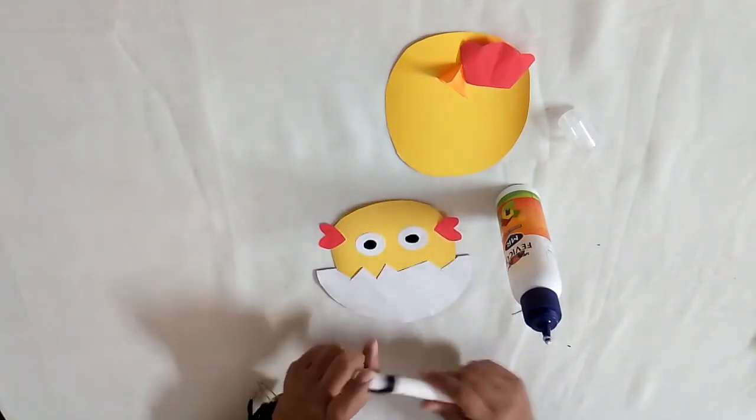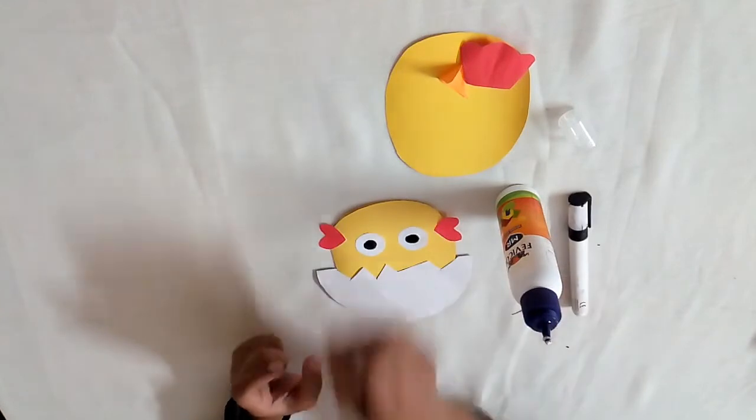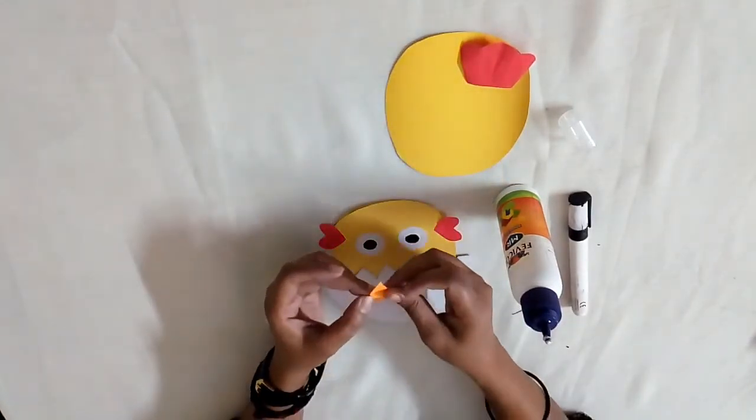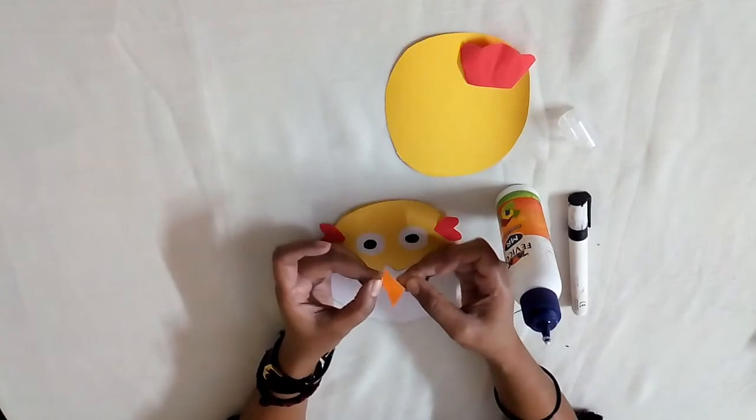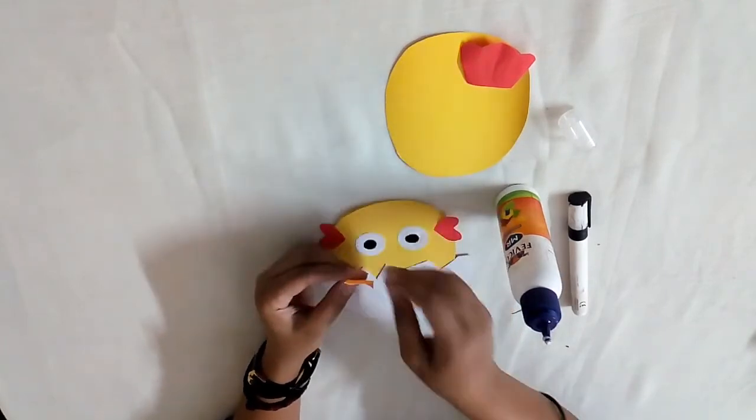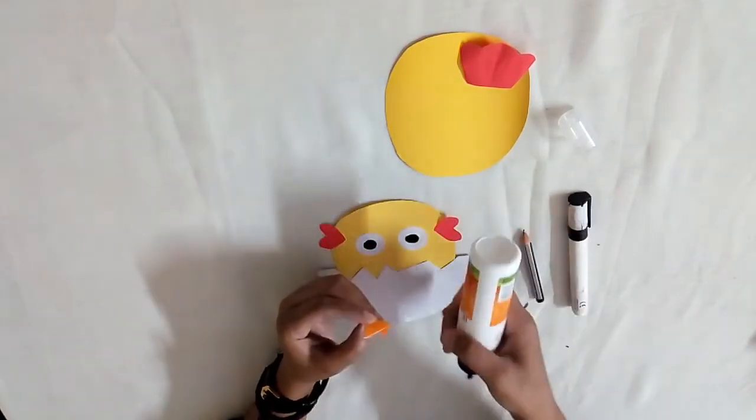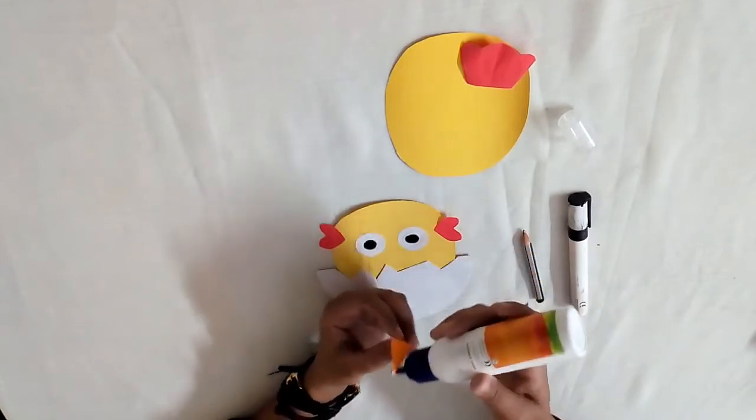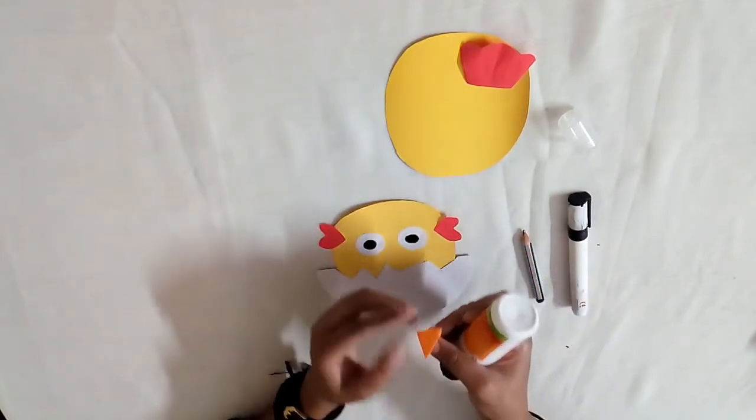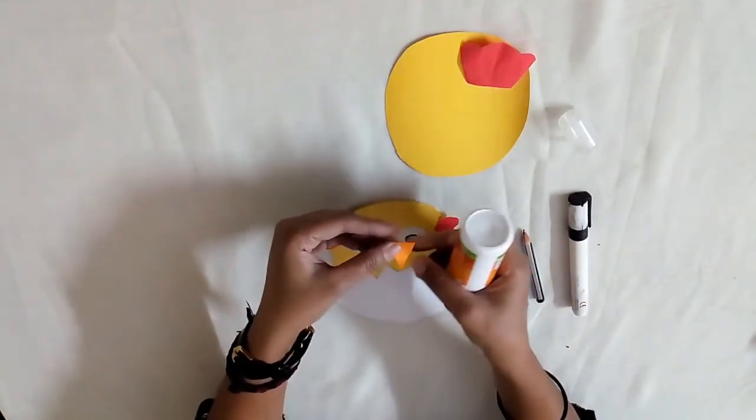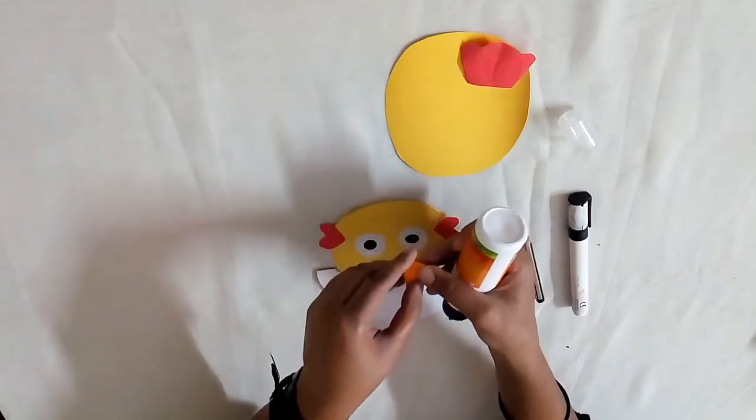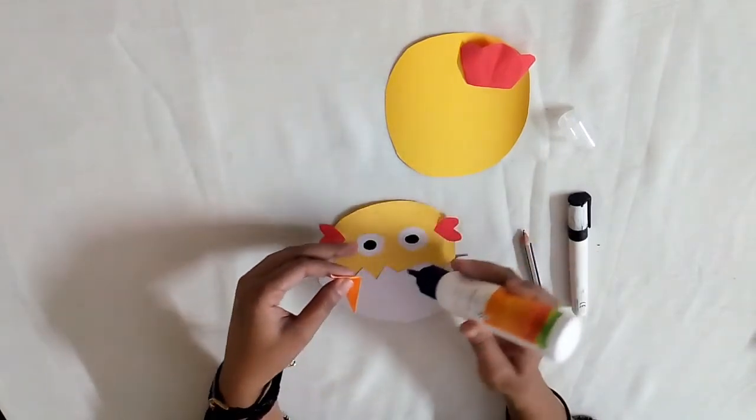Now for beak, take an orange polygon shaped paper.